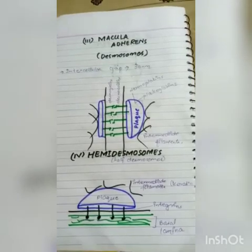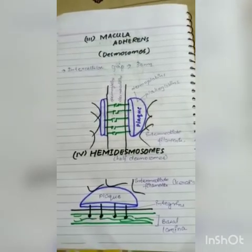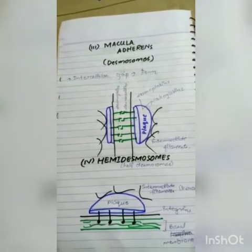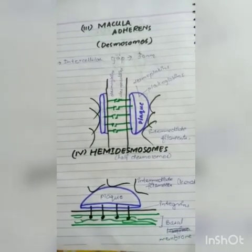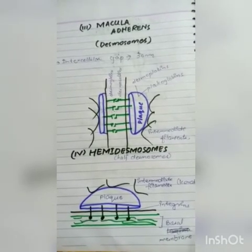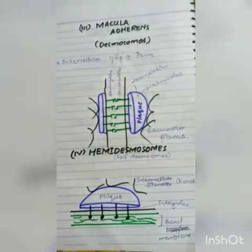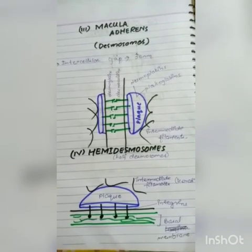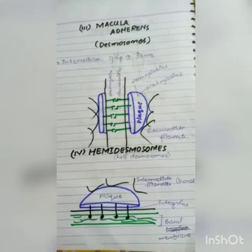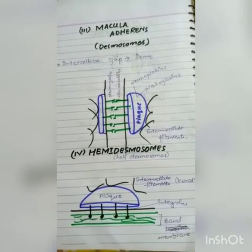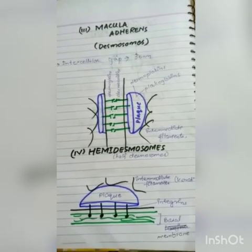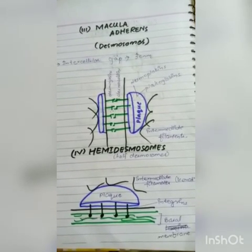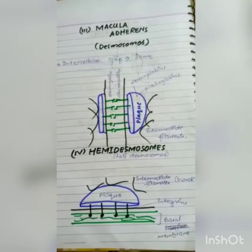Then there are hemidesmosomes, called half desmosomes. They are called half desmosomes because only one plaque is involved. Their important function is connecting the cell to the basement membrane. The transmembrane protein used is integrin. Integrin connects on one side to the cell and on the other side to the basement membrane, specifically to basal lamina collagen type 4.